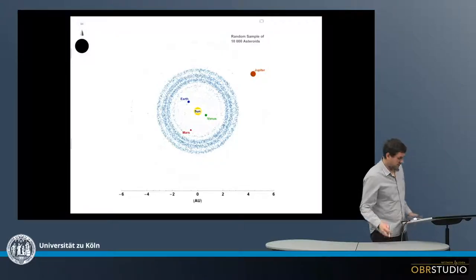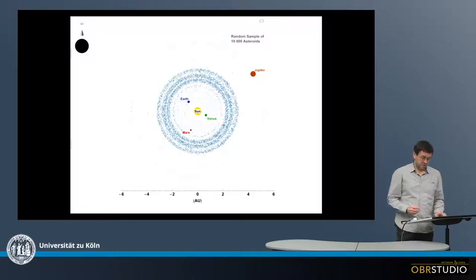Most of the asteroids are in the region between Mars, which is here, and Jupiter outside here. All the blue dots in here are the asteroids.